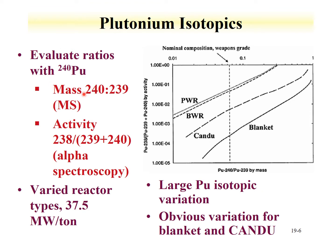For instance, the mass ratio between plutonium-240 and plutonium-239 can be evaluated—this is usually done with mass spectroscopy. The overall activity of plutonium isotopes, where plutonium-238 is measured and plutonium-239 and 240 alpha spectroscopy data is provided, and a ratio of the 238 to the 239 plus 240 is used. This is plotted where the Pu-238 divided by Pu-239 plus Pu-240 activity is plotted against the 240 to 239 mass.